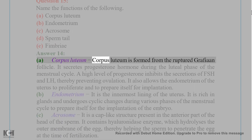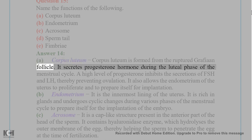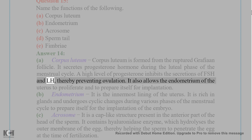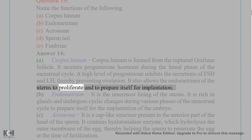Answer 15A. Corpus luteum: It is formed from the ruptured Graafian follicle. It secretes progesterone hormone during the luteal phase of the menstrual cycle. A high level of progesterone inhibits the secretion of FSH and LH, thereby preventing ovulation.